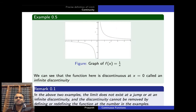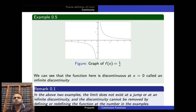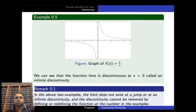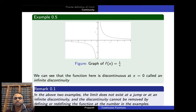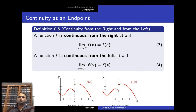Now consider the graph of y = 1/x. When x approaches zero from the right, the curve goes to positive infinity; when x approaches zero from the left, it goes to minus infinity. We cannot remove this discontinuity — it is not removable. We call this kind of discontinuity an infinite discontinuity, meaning the function goes to infinity at that point.